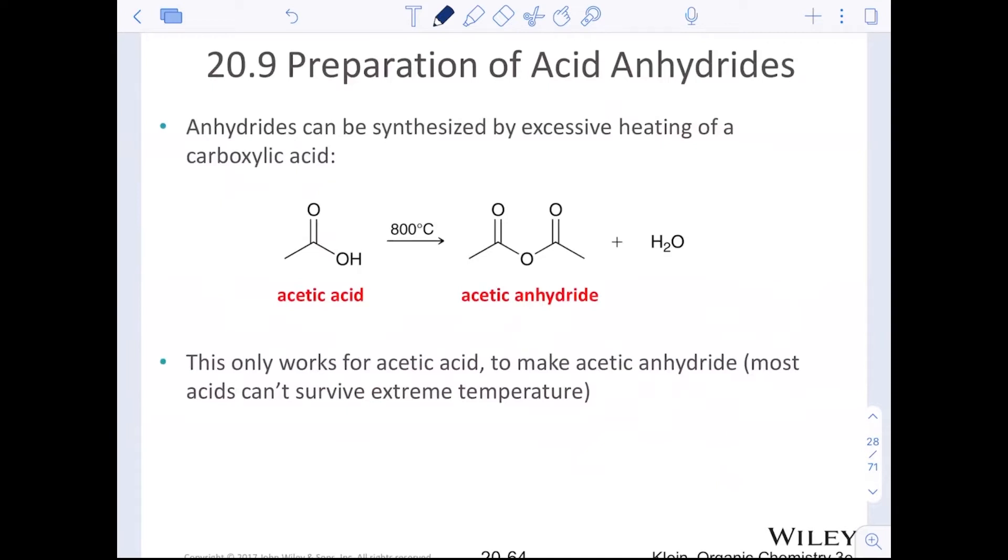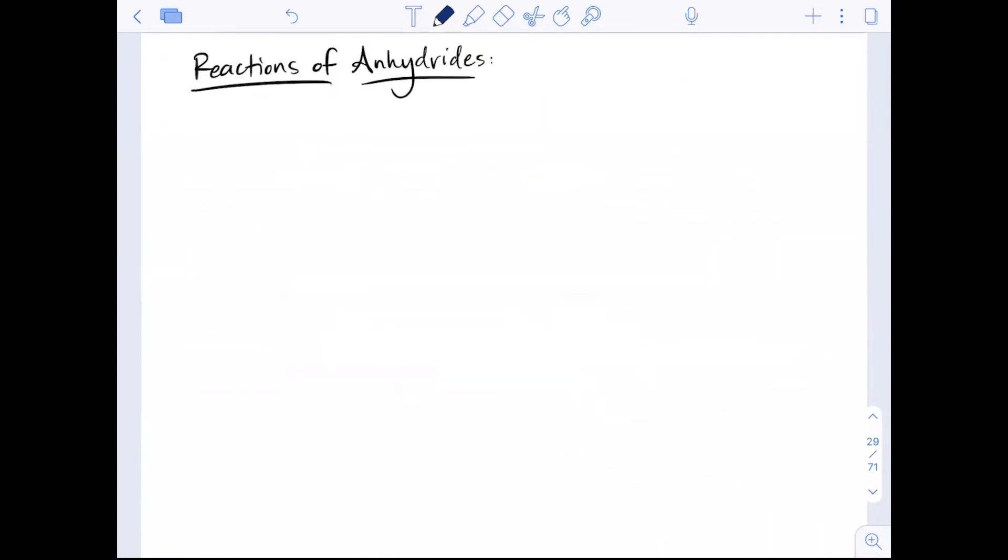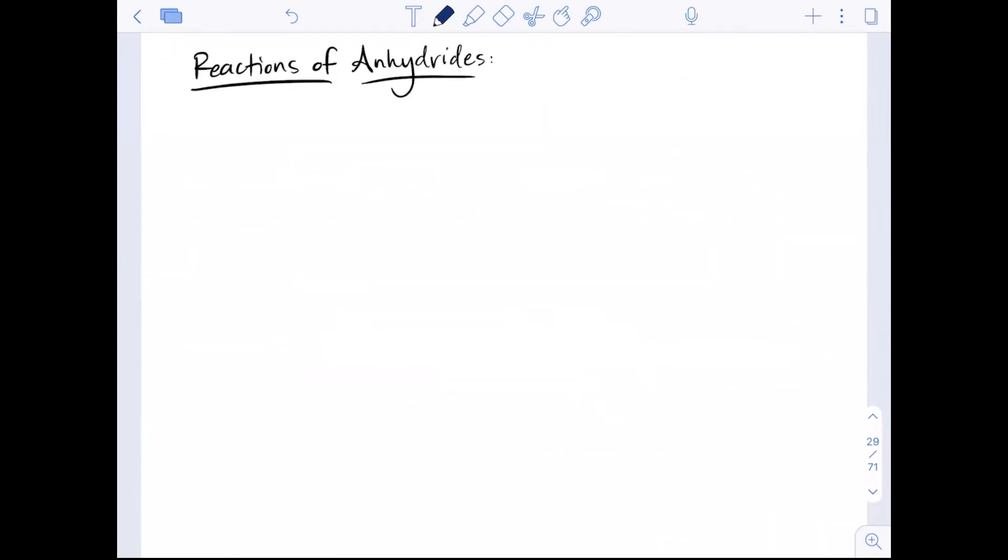Preparation of anhydrides. Now, anhydrides can be synthesized by excessive heat of the carboxylic acid. This only works for acetic acid though, so it's not something that you would most likely see on an exam. What we want to be able to think about is for our reactions of anhydrides, what can we actually do? Well, we can take an anhydride through a couple of different reactions. We are only going to show two.